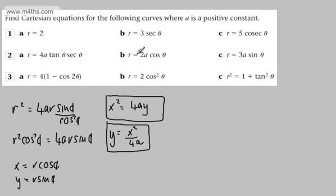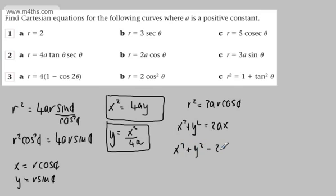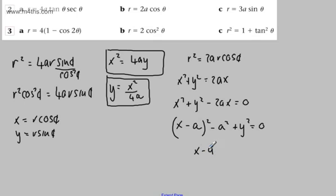For r equals 2a cos theta, multiply through by r to get r squared equals 2a r cos theta. Since r squared is x squared plus y squared and r cos theta is x, we get x squared plus y squared equals 2ax. Rearranging: x squared plus y squared minus 2ax equals 0. Completing the square gives (x minus a) squared plus y squared equals a squared — a circle, centre (a, 0), radius a.